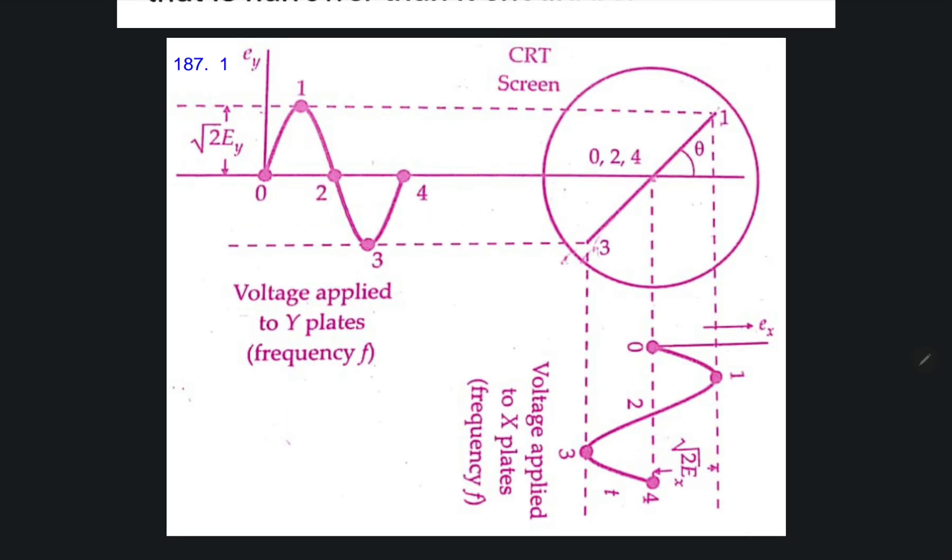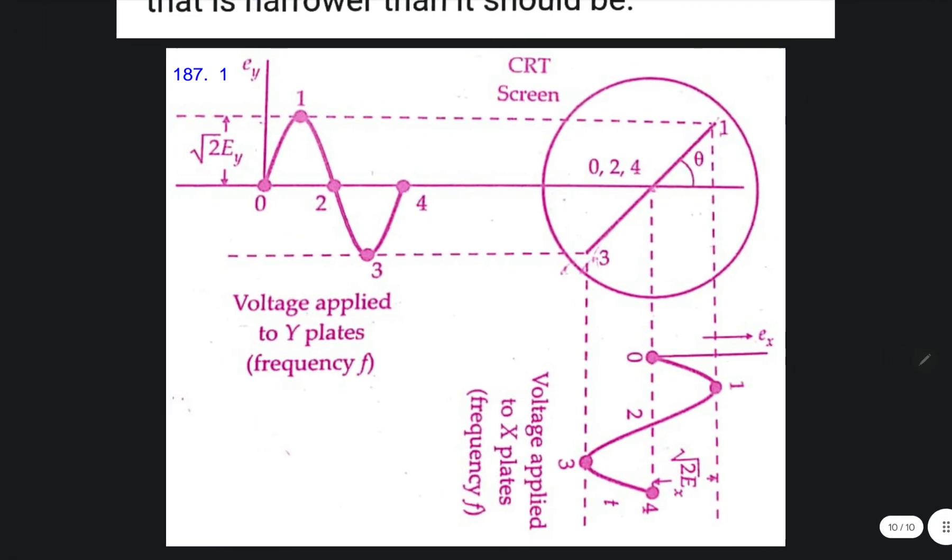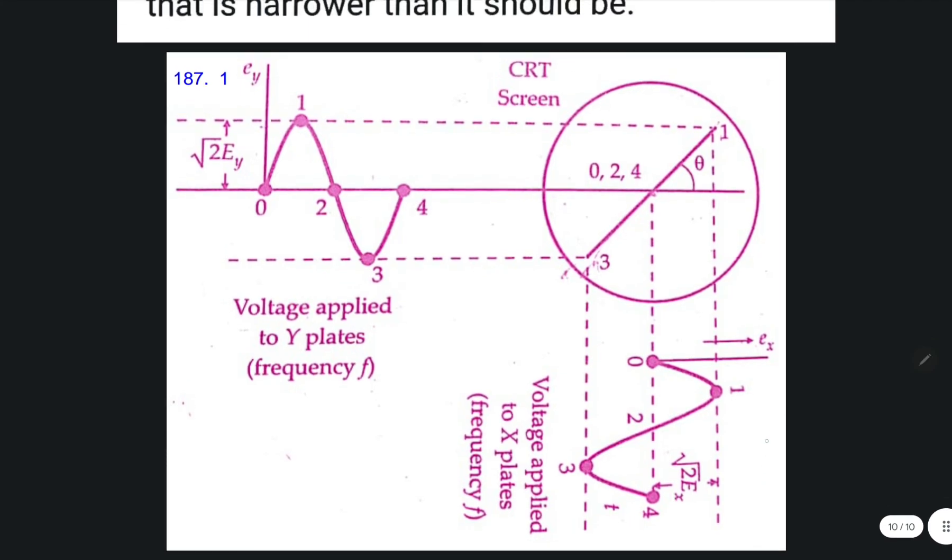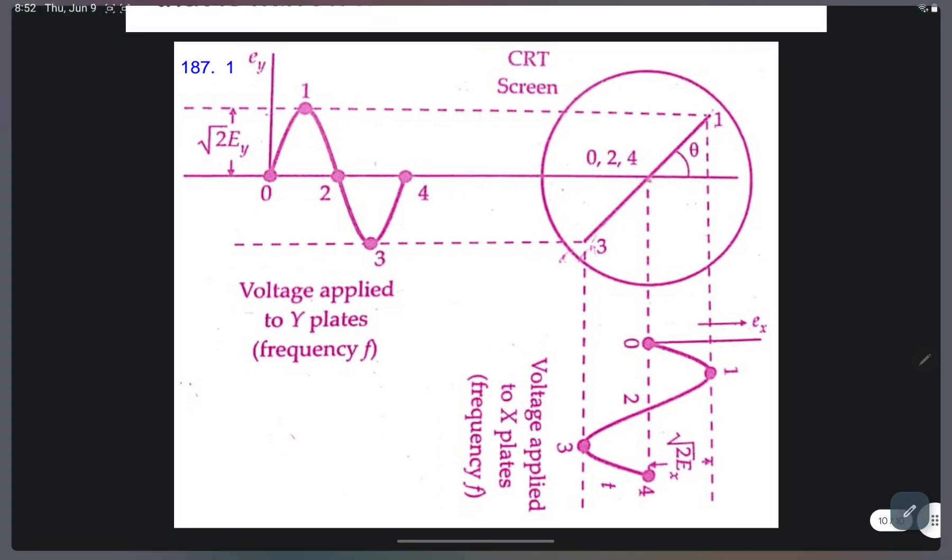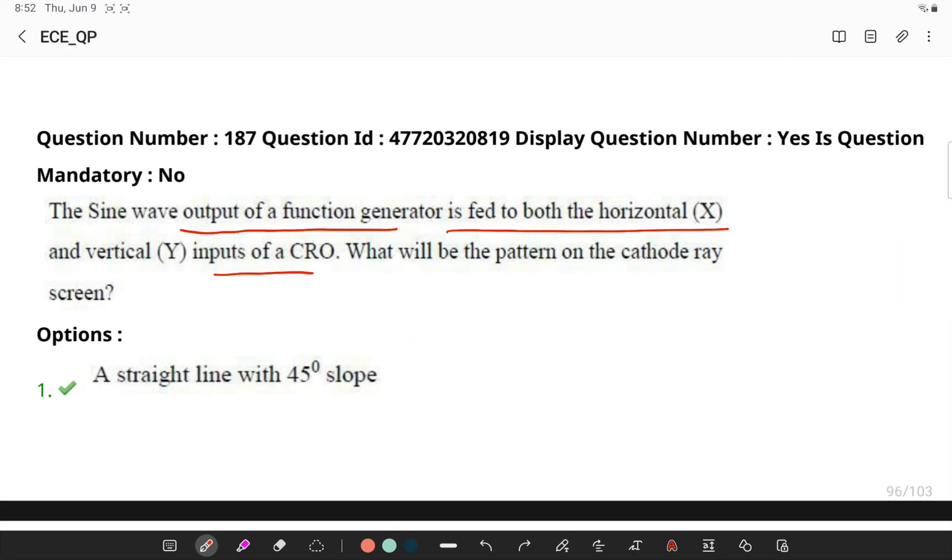So if you observe, here on the Y axis I have one waveform and on the X axis I have another waveform, and I am getting a straight line which is at an angle of 45 degrees. So if you see the question, the sine wave input of a function generator is fed to both horizontal X and Y inputs of a CRO. So in the CRO, you will be getting a straight line with a slope of 45 degrees.